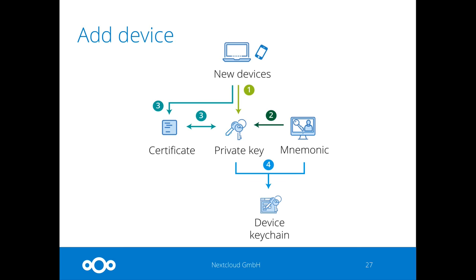What we now have is the private key encrypted by 12 words on the server, which means other devices will be able to download it. Adding a new device: it downloads your public and private key from the server, checks the certificate, and then asks you for the 12 words so it can decrypt the private key. So you grab your mobile phone, say show me my 12 words, and you type them in. That's a little laborious — we're working on showing a QR code instead. But for now you still type in the 12 words. At this point, the mnemonic and private key are saved in the keychain on the device, and you now have two devices that both have a private key and your identity.